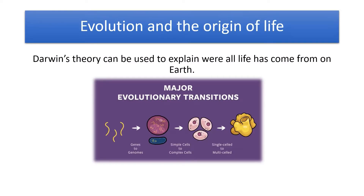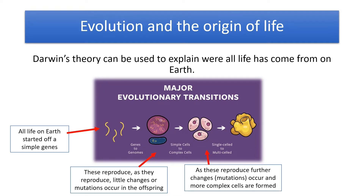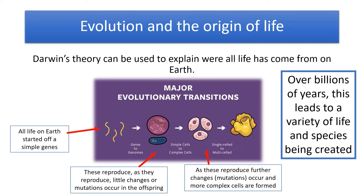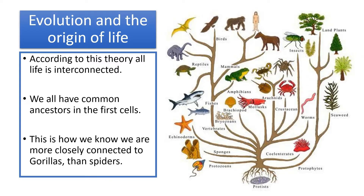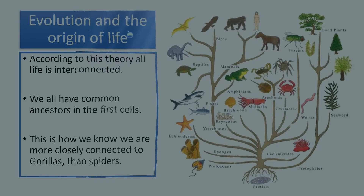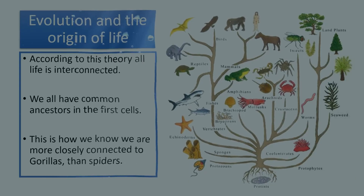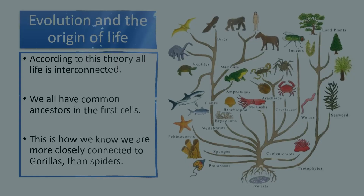If you look at the diagram here and draw this back billions of years, it suggests that all life starts off as simple genes. These genes mutate, change, reproduce, and give rise to small changes. As this continues, they go from simple cells to complex cells, which then mutate and change and produce more offspring. Over billions of years, this explains the variety of life we have on earth. The diagram on the board shows it in a tree shape, illustrating how all life is interconnected — all starting from a common ancestor of simple first cells. Over billions of years, small mutations become big changes, which is how we can work out that we are more closely related to gorillas than to spiders, worms, or seaweed.